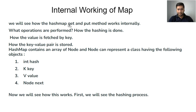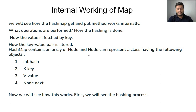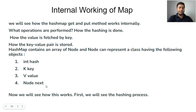We will see how the HashMap get and put methods work internally — what operations are performed and how hashing is done. HashMap contains an array of nodes internally, and a node can represent a class having fields: int hash, key, value, and next node. Now we will see the hashing process.